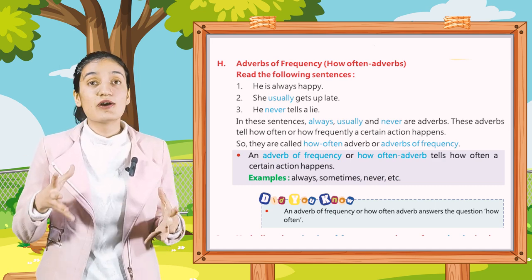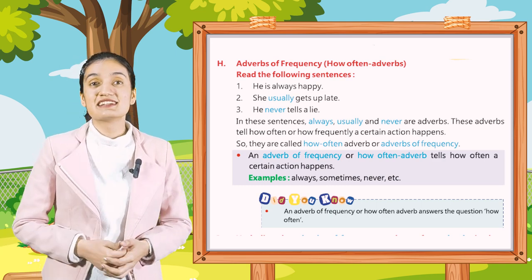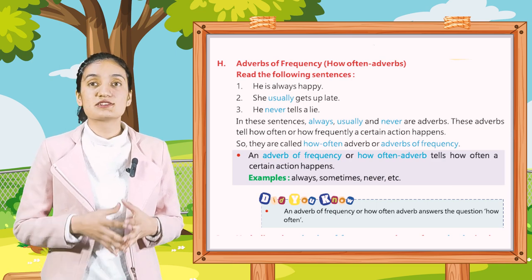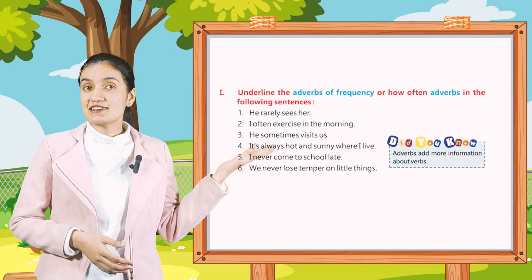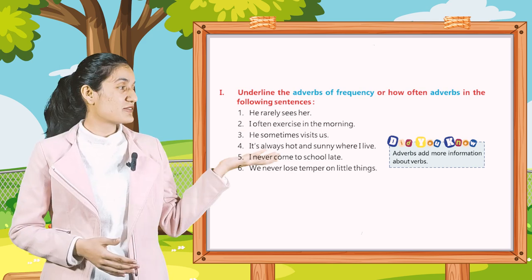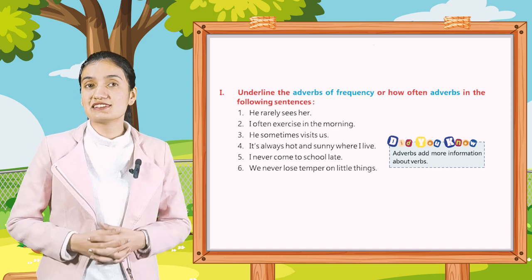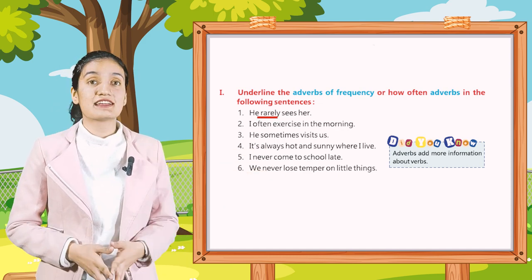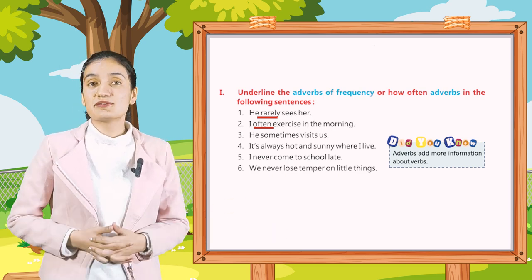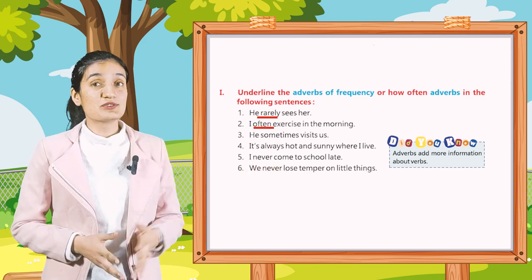An adverb of frequency tells us how often a certain action happens. Examples: always, sometimes, never, etc. An adverb of frequency answers the question: how often? Part I: Underline the adverb of frequency in the following sentences. First: He rarely sees her — underline 'rarely'. Second: I often exercise in the morning — underline 'often'. Underline the other adverbs accordingly.